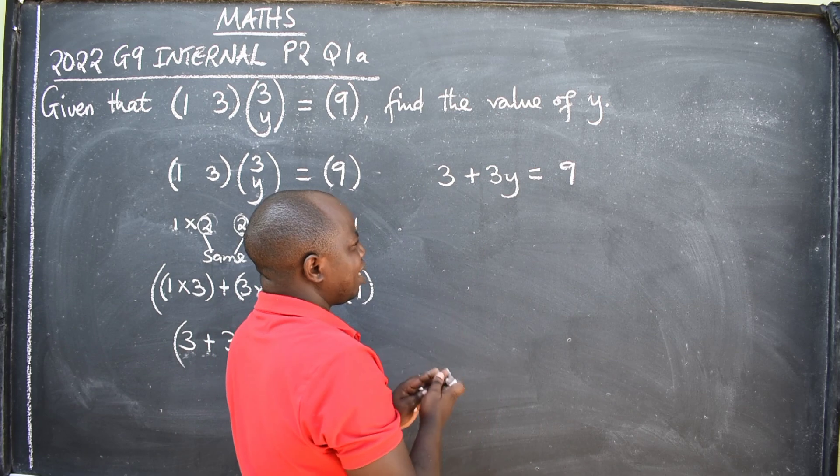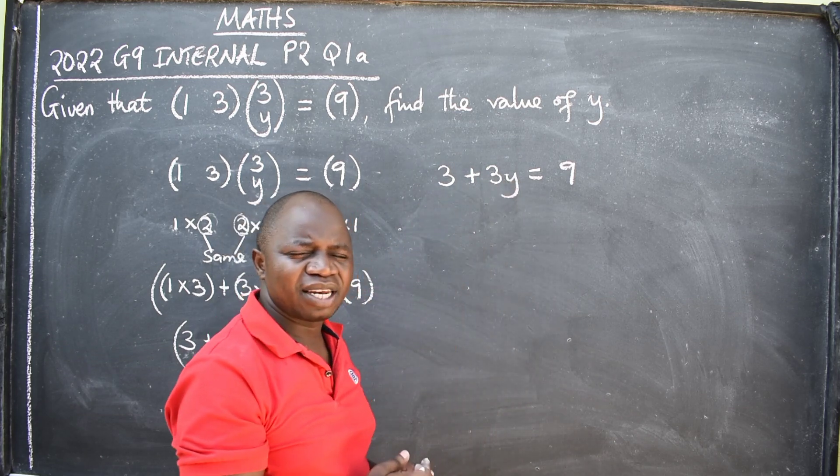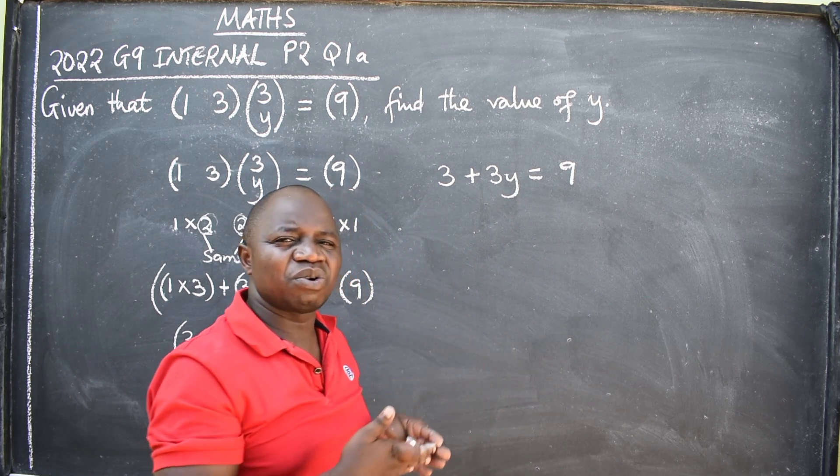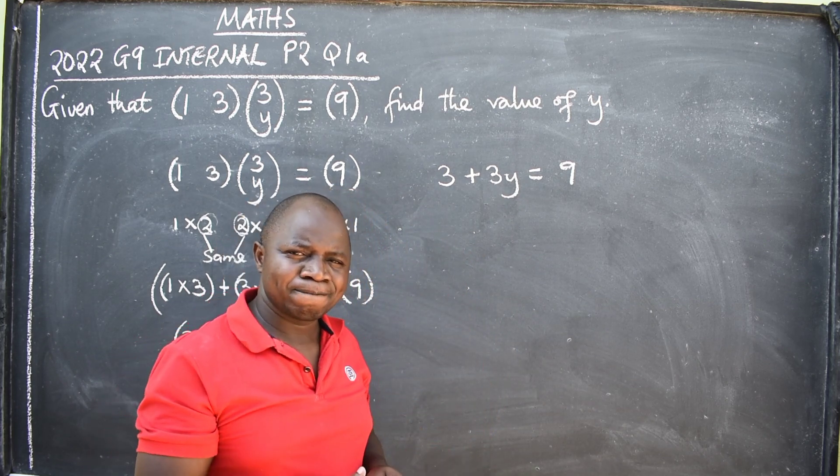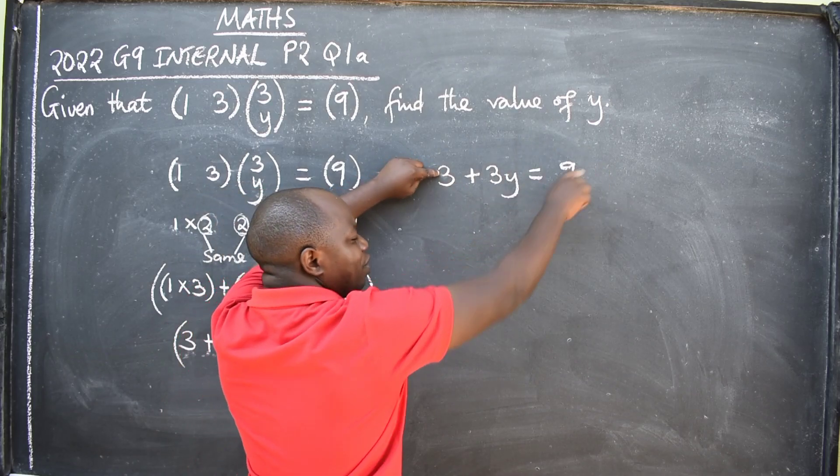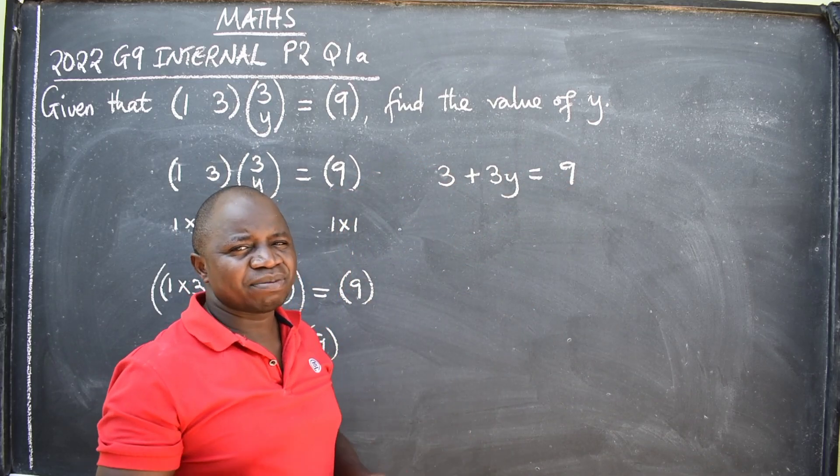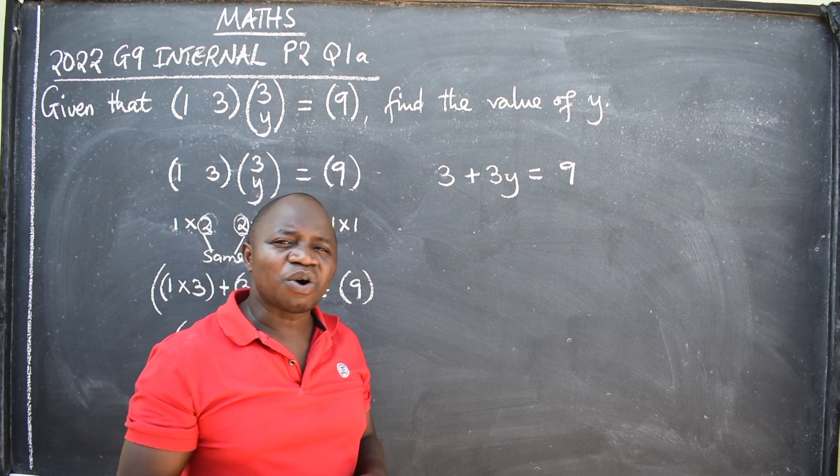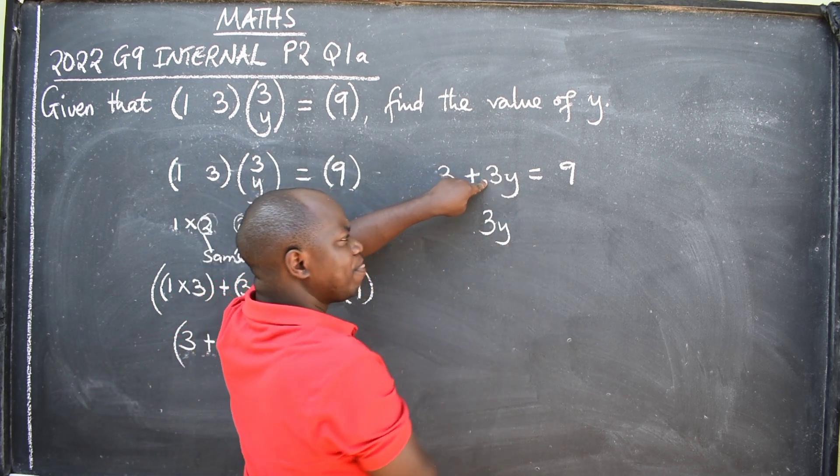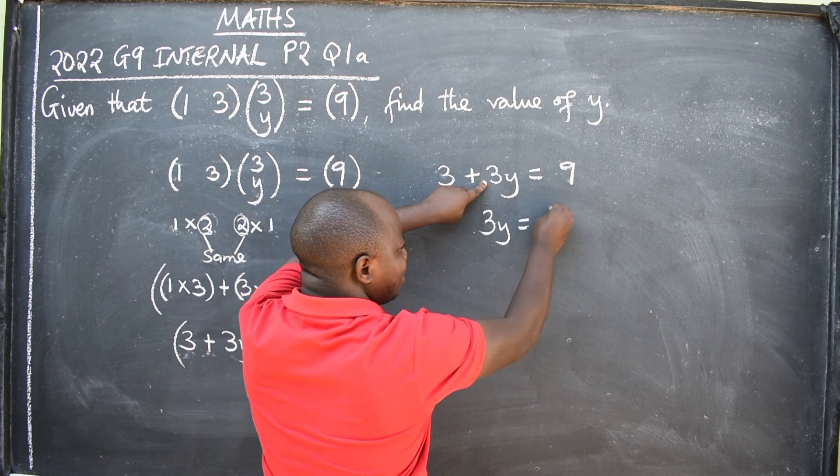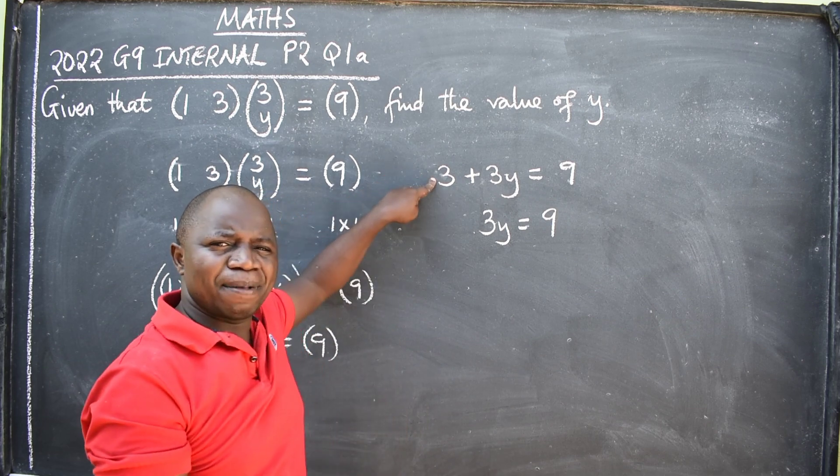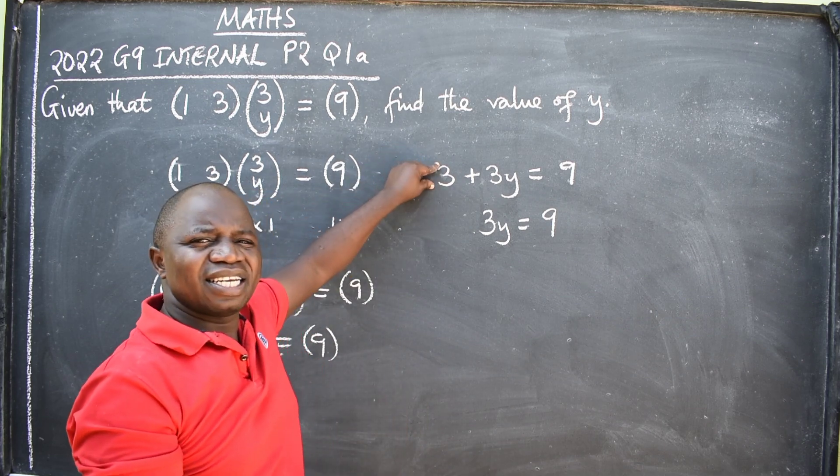On my left hand side here, I've got two terms. Now, my interest is just to remain with the term that has got y or variable. This one here should go on the other side. In short, I'm saying collection of like terms. So, here it will just be three y is equal to write this nine here. See that? Then, look at this three here. This side, it is positive. Positive three.